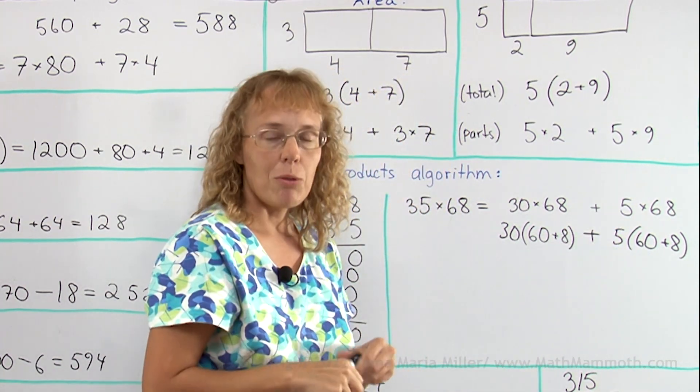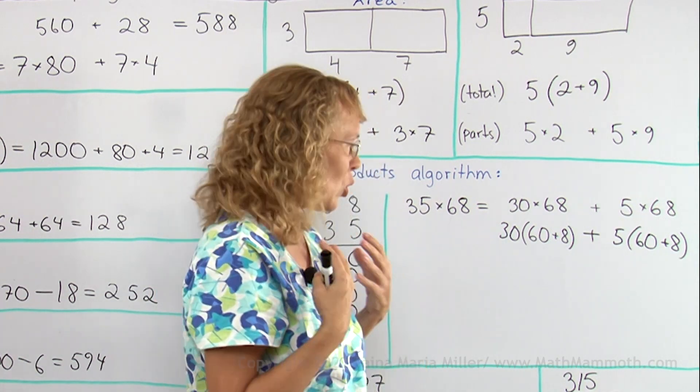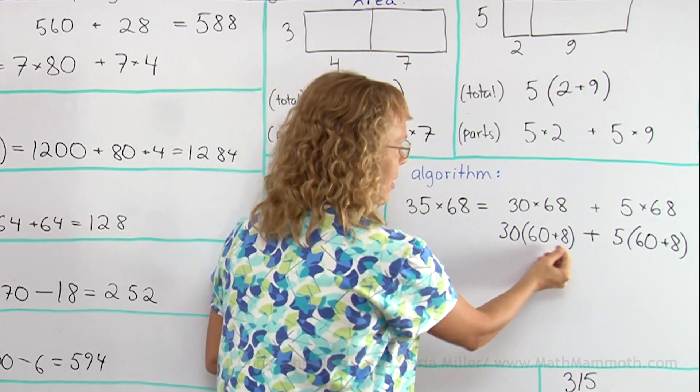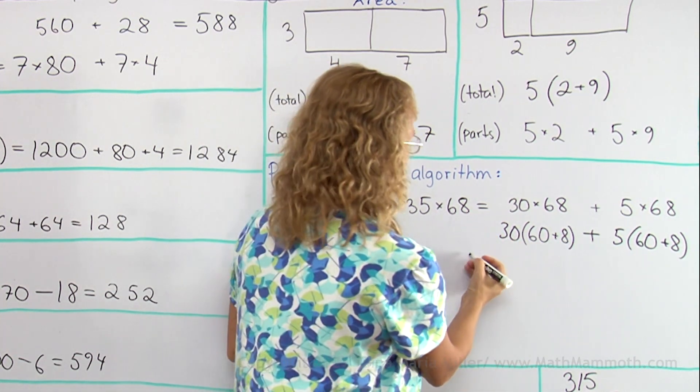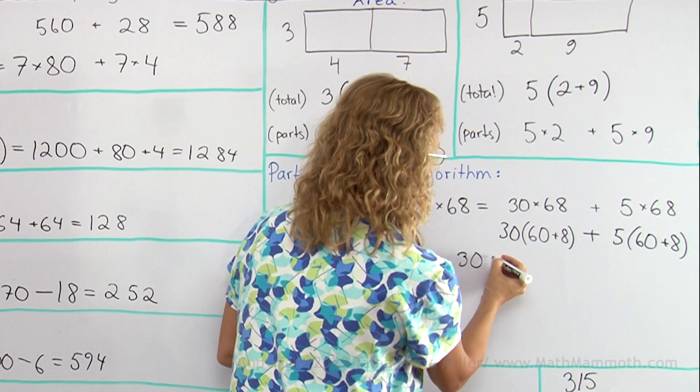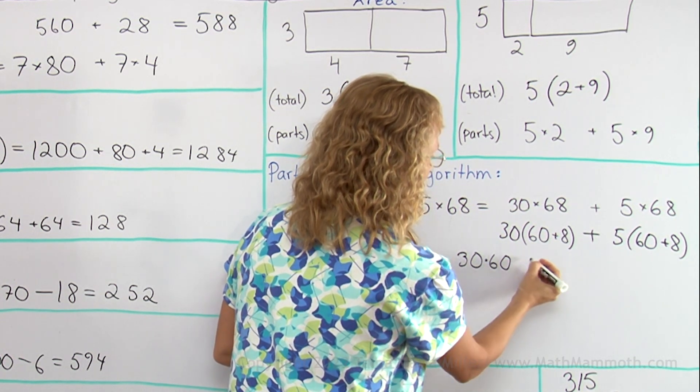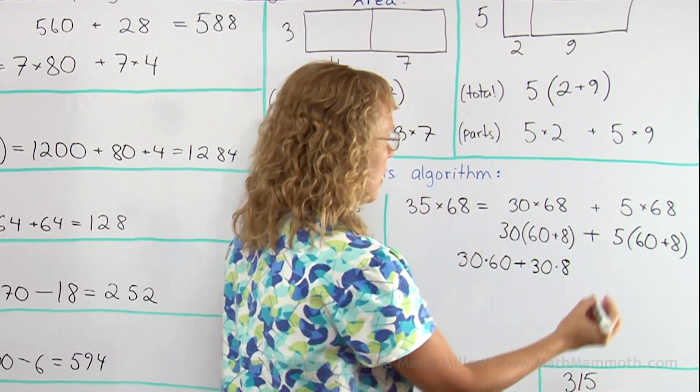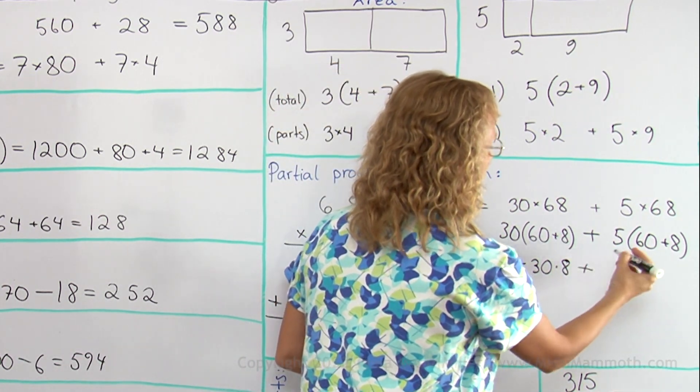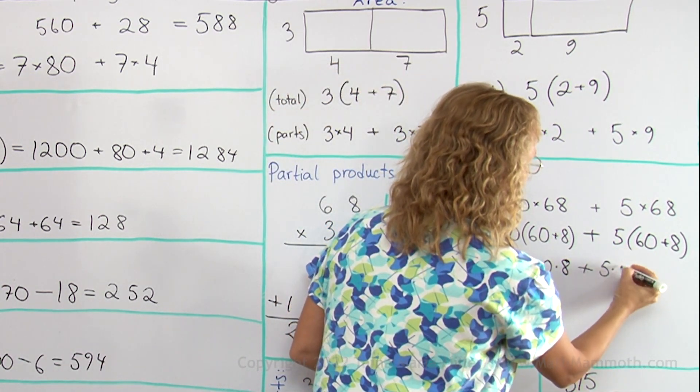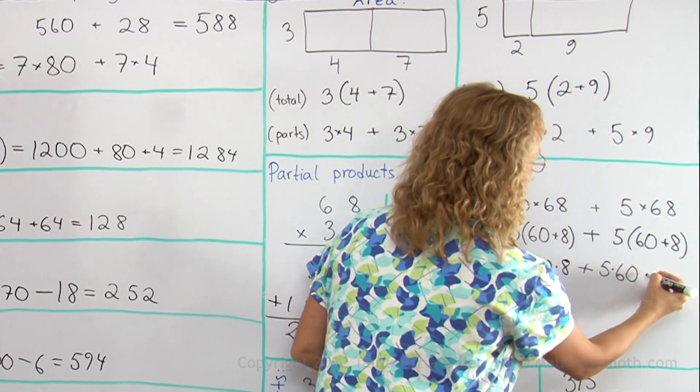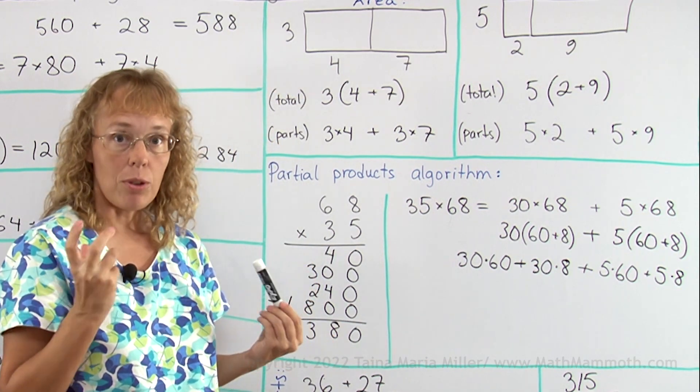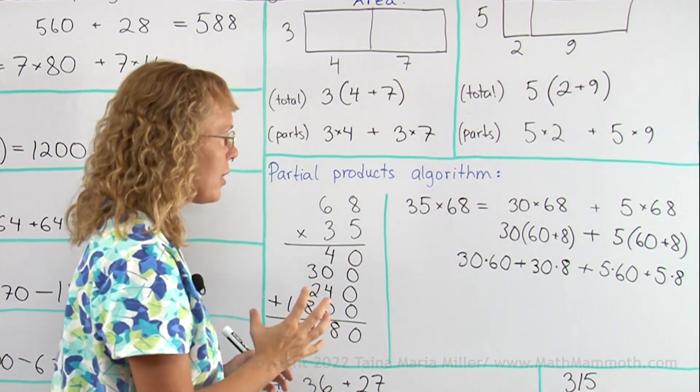And now, I will use the distributive property or multiplying in parts, where I multiply 30 times 60 and then 30 times 8. I need to go here to write it all. 30 times 60 and 30 times 8. This plus here and then 5 times 60 and then 5 times 8. Now, I have 4 multiplications.